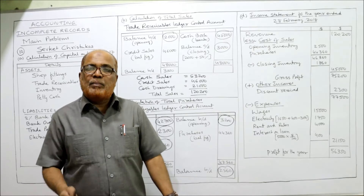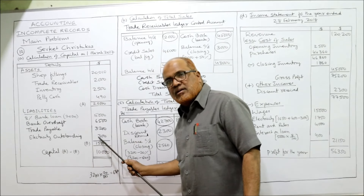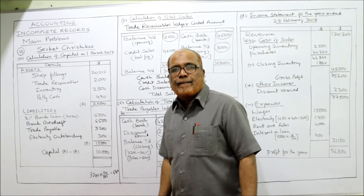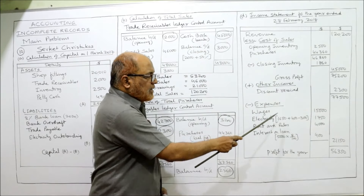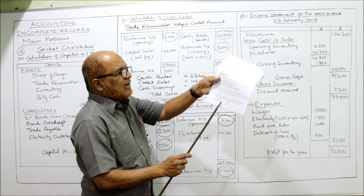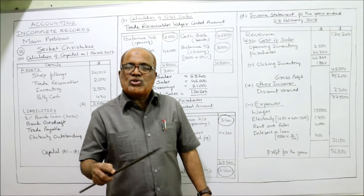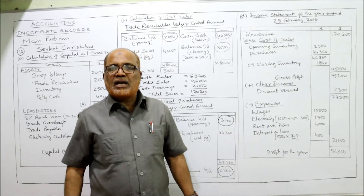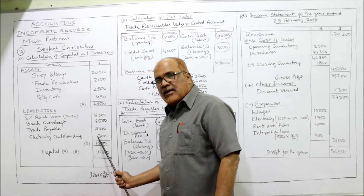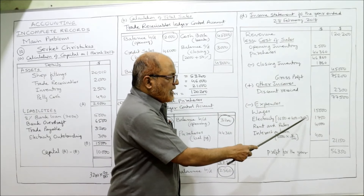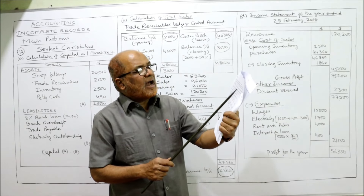Electricity outstanding at the beginning of the year was $300, and current year outstanding is $400. To calculate the correct electricity charge: electricity paid $1,650 plus current year outstanding $400 minus last year outstanding $300 = $1,750. Also, loan interest at 8% per annum had not been paid.